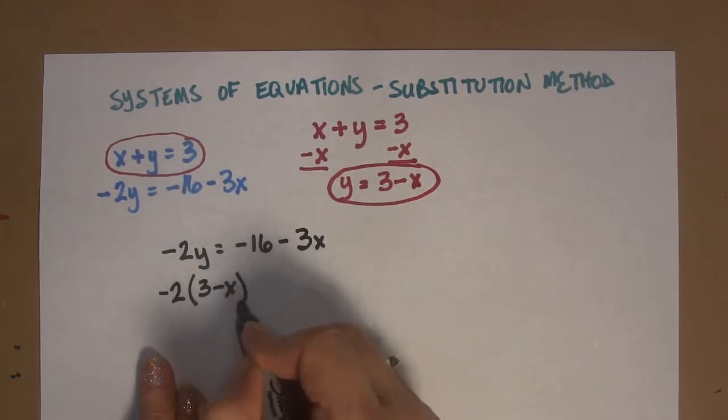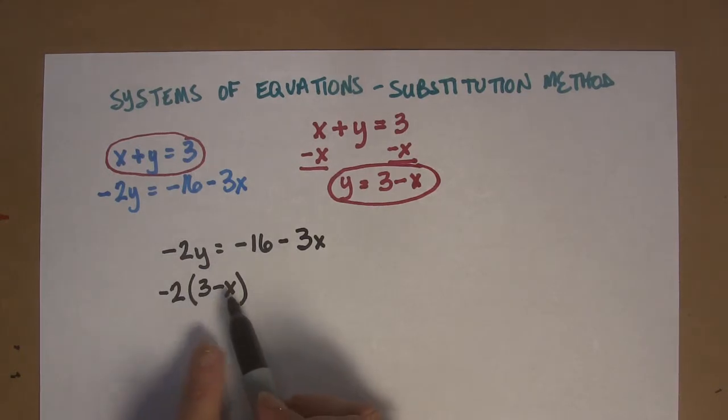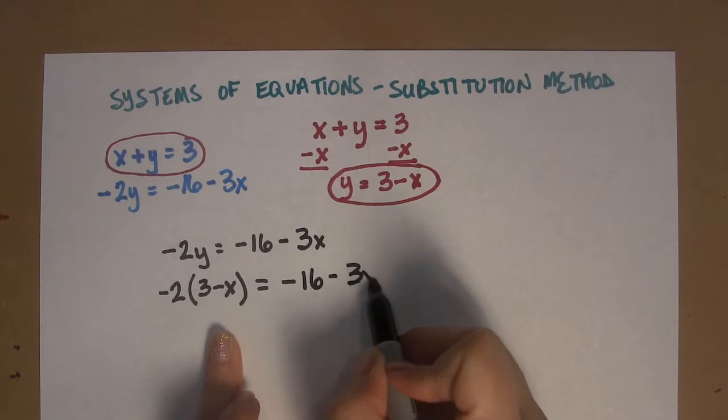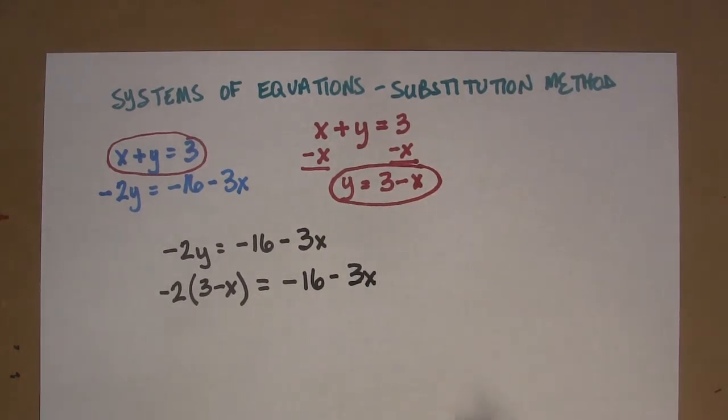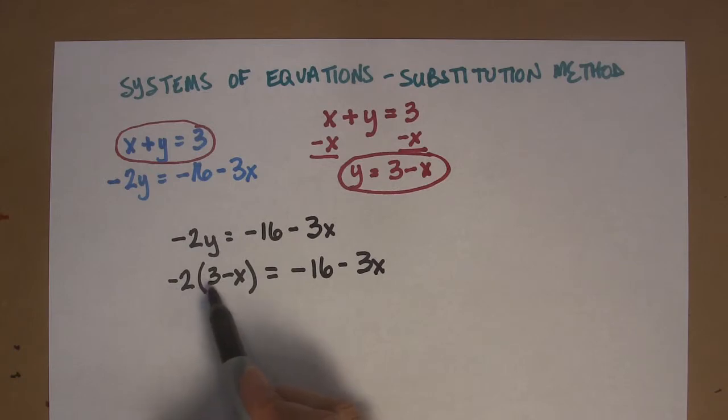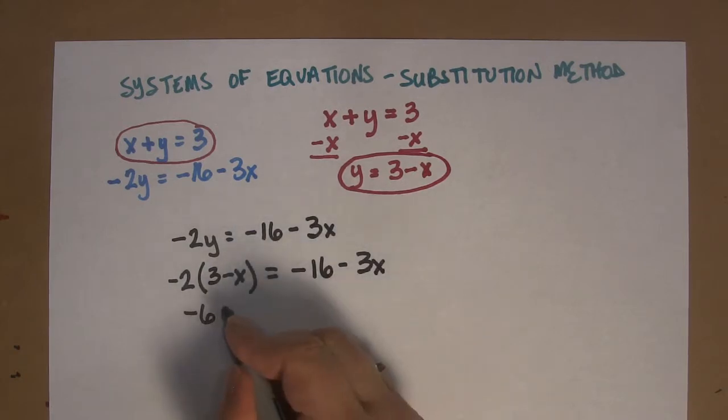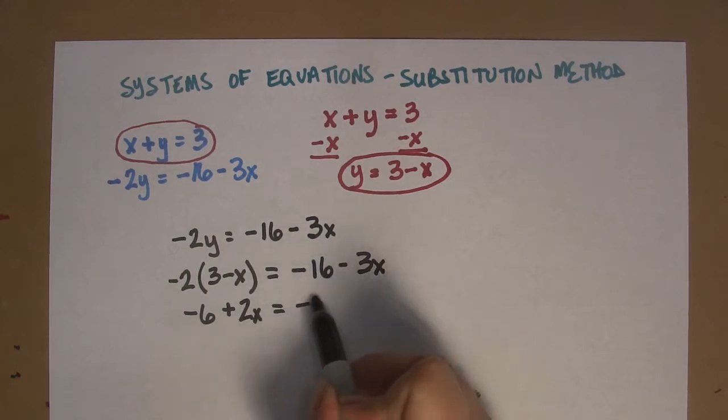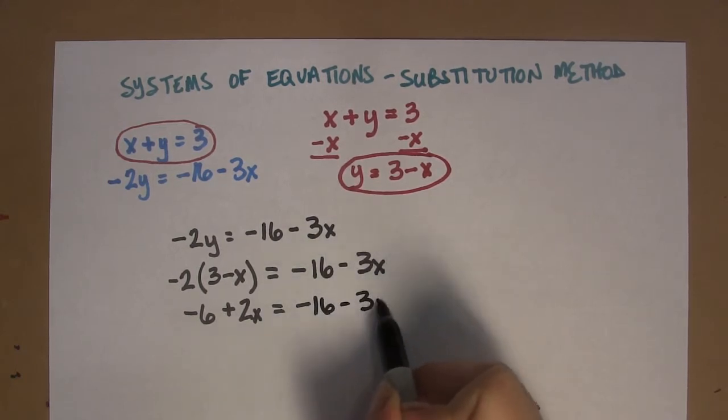So here we have negative 2 times 3 minus x equals negative 16 minus 3x. Now all we have to do is solve for x. So negative 2 times positive 3 is a negative 6. Negative 2 times negative x is a positive 2x equals negative 16 minus 3x.